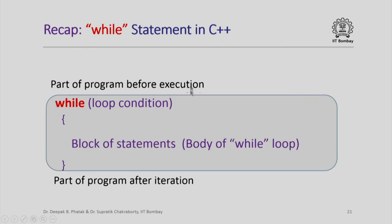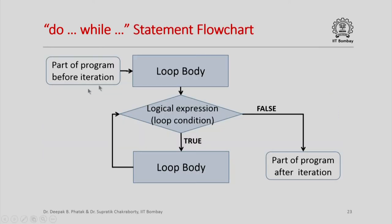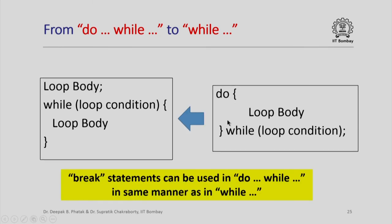Recall the while statement in C++. There is a very similar construct called do-while. In a do-while statement it is basically the same as while except the block of statements is executed at least once. The flowchart shows: program before iteration, execute the loop body, check the loop condition — if true, execute the loop body again; if false, exit. A while loop can be easily converted to do-while by checking the condition first, and a do-while can be implemented as a while by ensuring the loop body executes at least once. Break statements can be used in do-while the same way as in while.